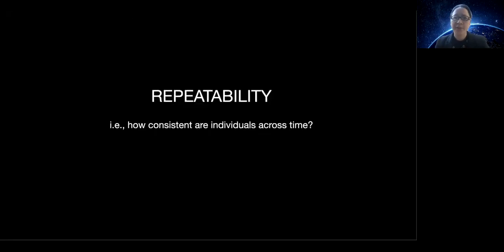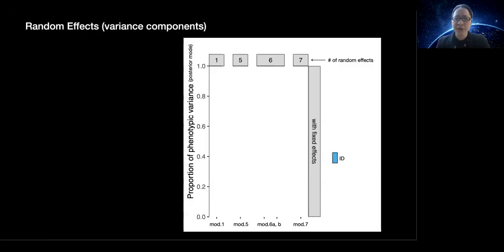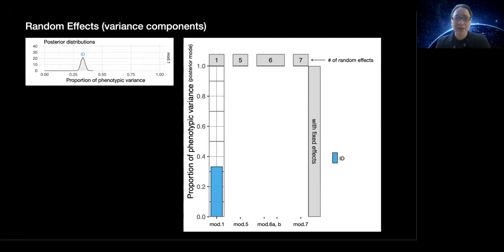Now we will spend more time understanding the variance components in our models, the random effects. Remember, we started out interested in the repeatability of our behavioral measure. If we were to consider a model that only included the identity of our subjects as a random effect, we would see that subject identity would account for roughly one third of the variance in our sociality measure. If we plotted the posterior distribution of the ID term, we would see that there was low to moderate repeatability in our behavioral measure.